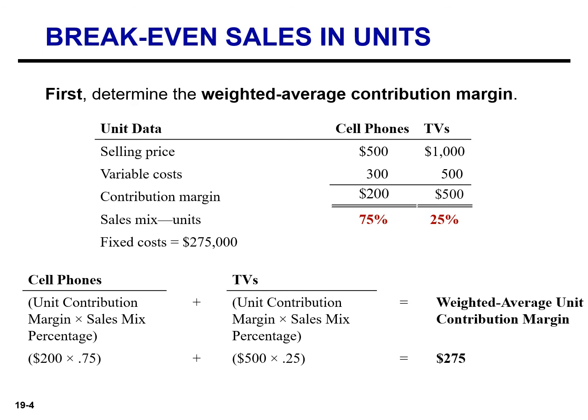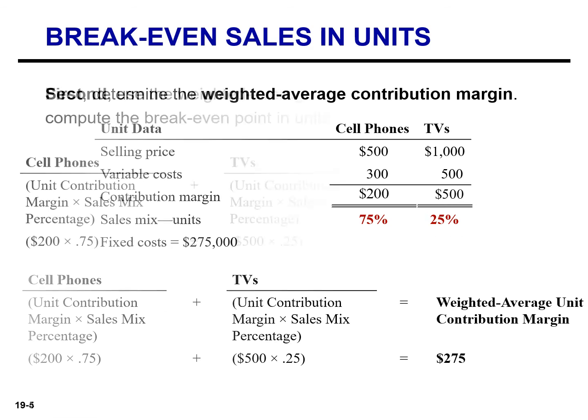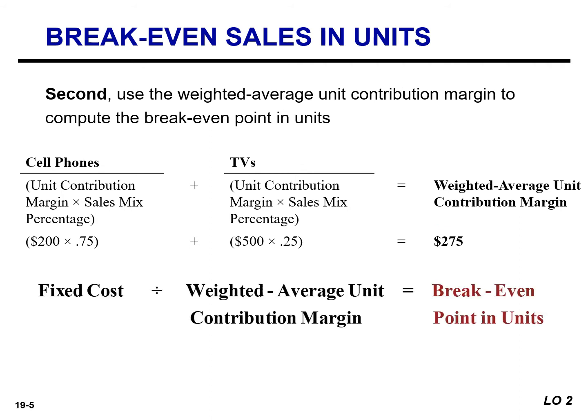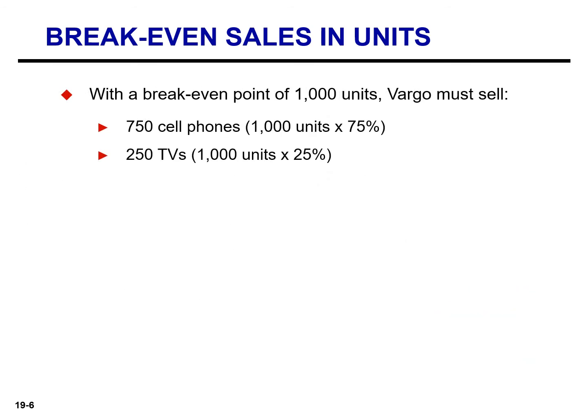That $275 is the weighted average contribution margin for a sales mix of 75% cell phones and 25% TVs. Similar to the calculation in a single-product setting, we compute the break-even point in units by dividing the fixed cost by the weighted average unit contribution margin of $275. The break-even point for Vargo is 1,000 units total — comprising 750 cell phones and 250 TVs — based on the 75%/25% sales mix percentages.